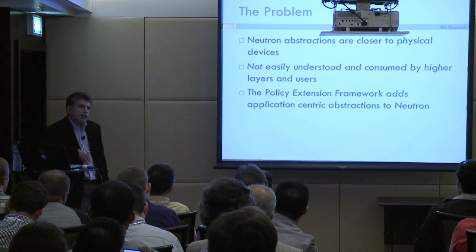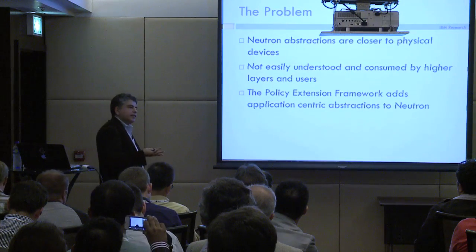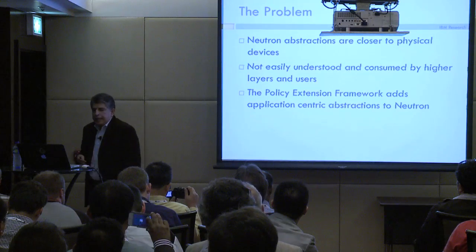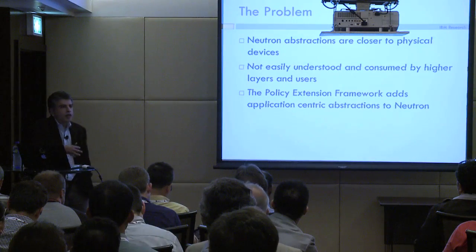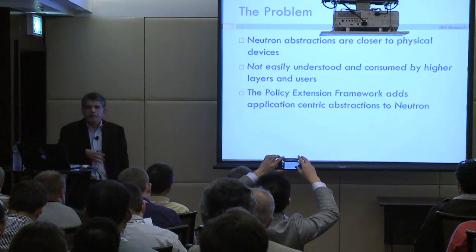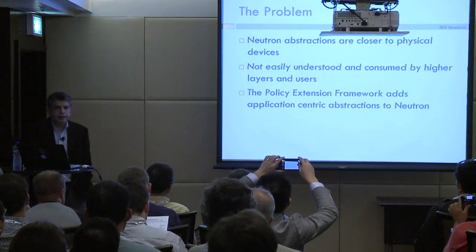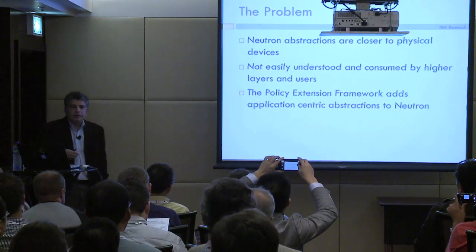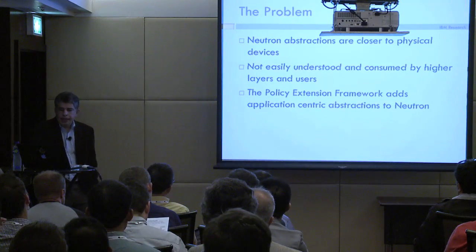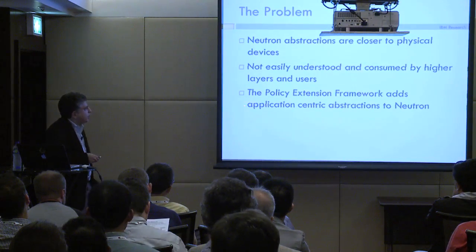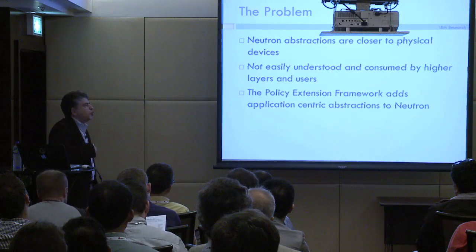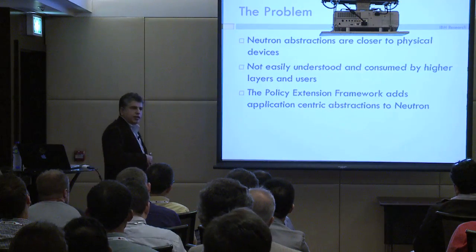That's essentially the problem we are trying to address here. We want to overcome the fact that Neutron abstractions are right now very close to physical devices. We want to propose a higher level of abstraction. The policy extension framework adds more application-centric abstraction to Neutron.